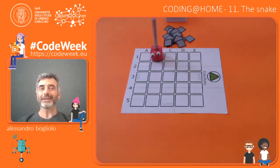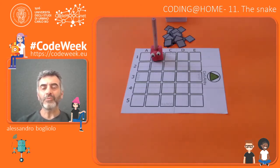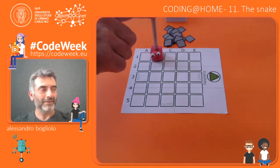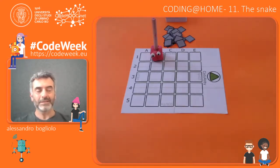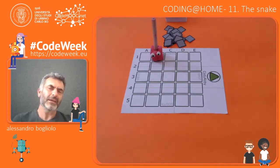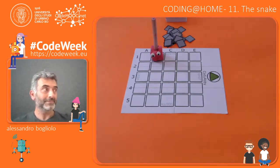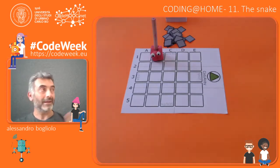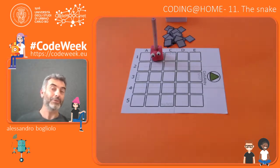Welcome back to Coding at Home. Today we are going to play a solitaire, which means that we have only one team, only one robot, and we can even play alone. But today I'm with Anna and I will let Anna play the solitaire.